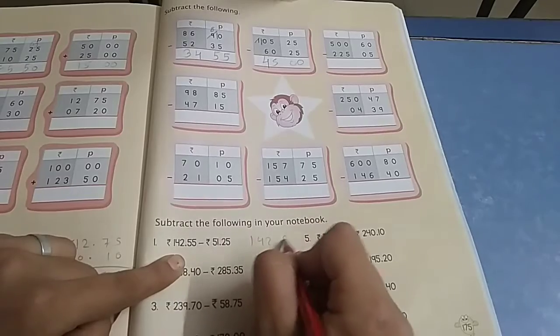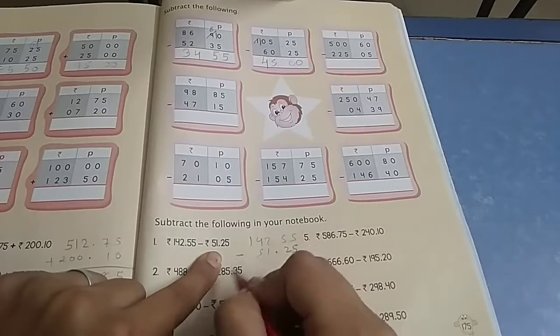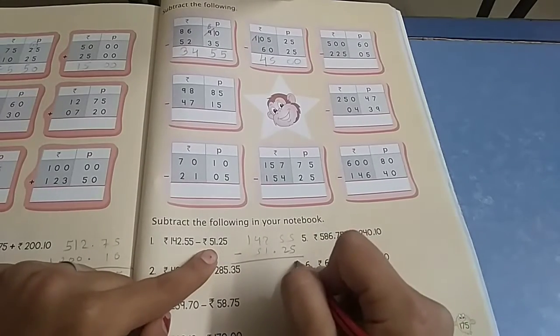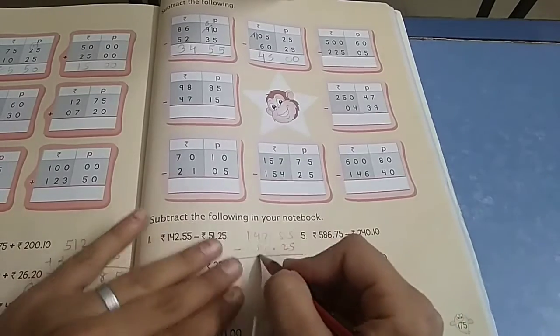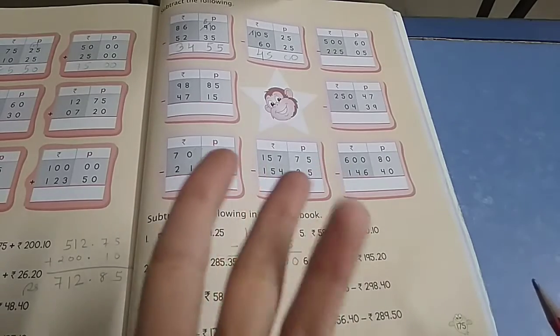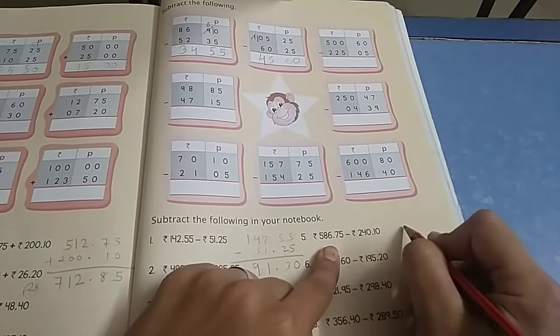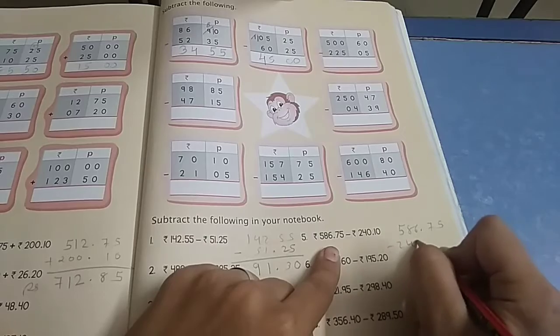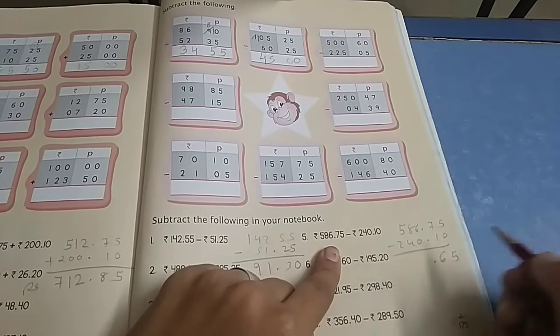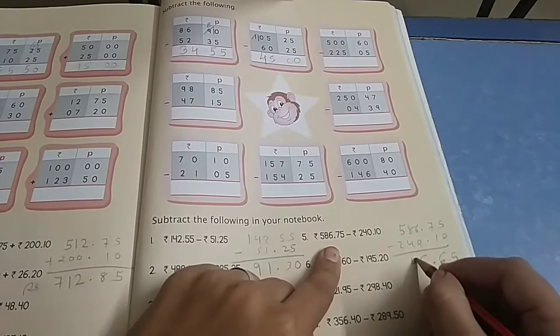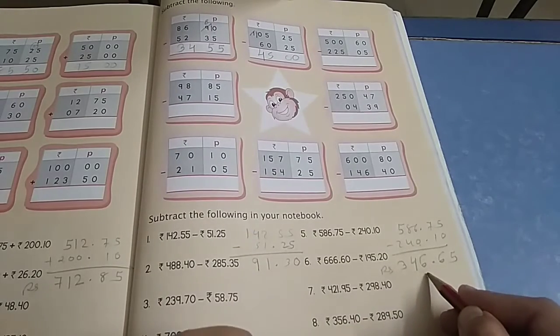Next problem: 5 minus 2 is 3, point here, 2 minus 4 needs borrowing. 1 becomes 0, 12 minus 4 is 8. 5 becomes 4, 4 minus 1 is 3, 5 minus 5 is 0. Now this one: 586.75 minus 240.10. 5 minus 0 is 5, 7 minus 1 is 6, place the point. 6 minus 0 is 6, 8 minus 4 is 4, 5 minus 2 is 3. You have 346 rupees 65 paise.